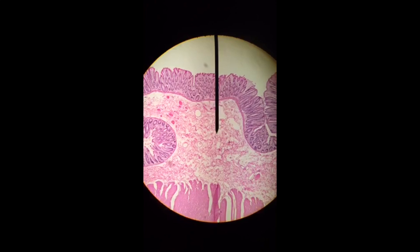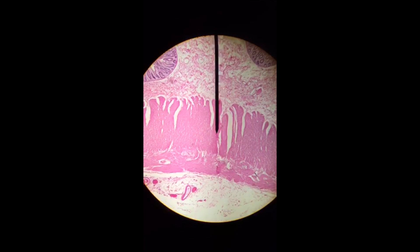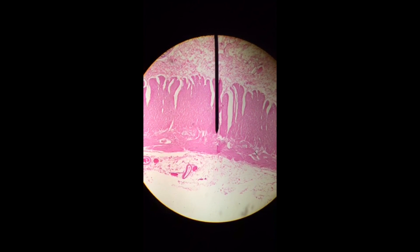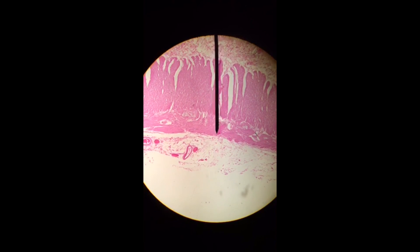Below that are two layers: there's our first circular layer of muscle and then our second longitudinal layer of muscle in the muscularis.